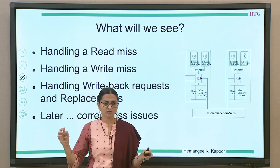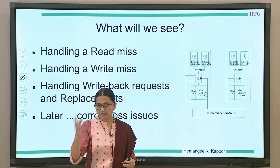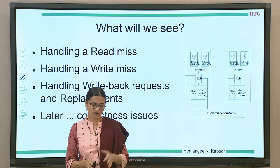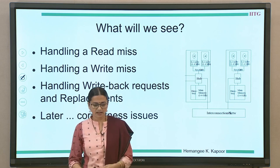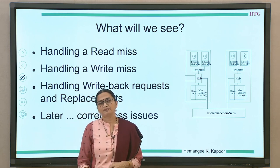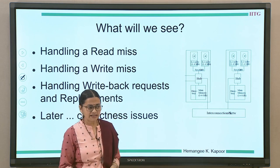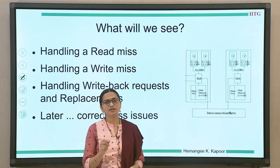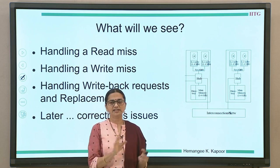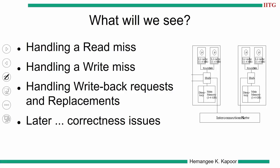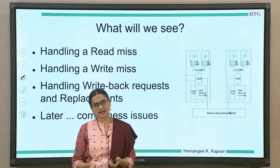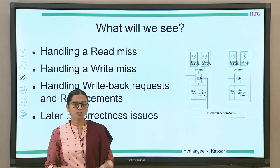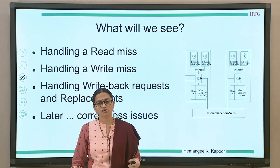When we have such a big size system where there could be multiple caches sharing various data items, they want to do coherent read and write accesses to this data, and the directory has to handle all of this. It is a flat memory-based protocol; hence the directory information is kept with the main memory associated with that particular node. We are going to see how a read miss is handled, how a write miss is handled, and how a write back or a replacement is handled in this lecture. In the next one, we are going to look at the correctness issues.